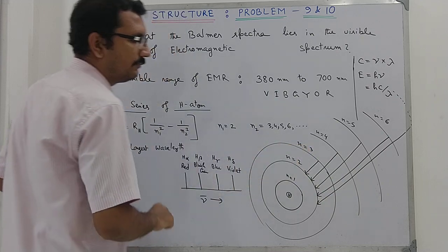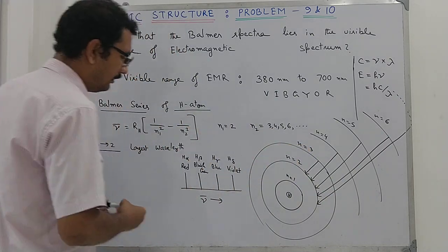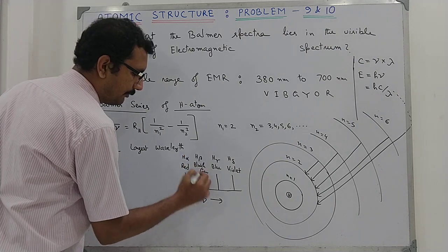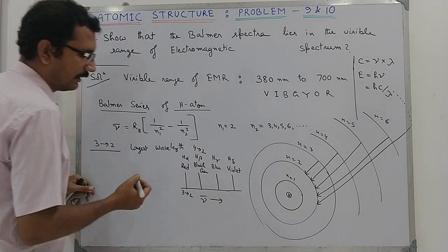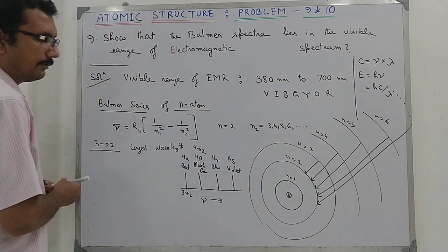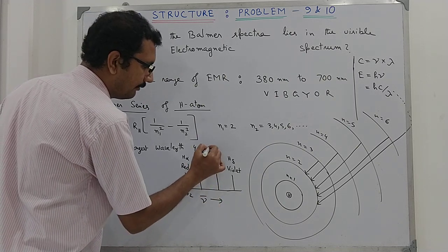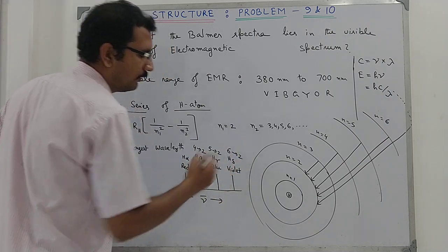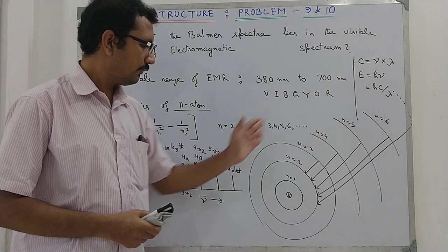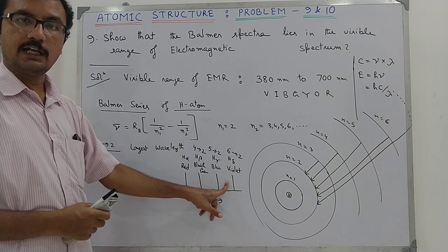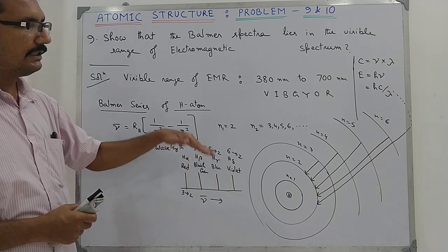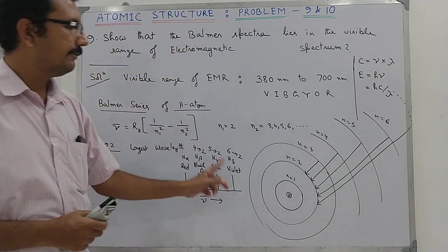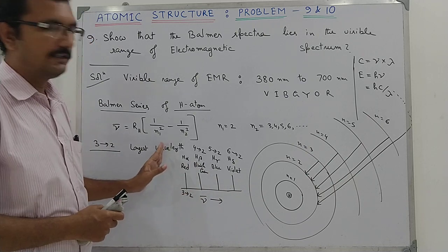The 3→2 transition has the lowest energy, so it gives the longer wavelength — red light (Hα). The 6→2 transition has the highest energy gap among the four Balmer lines, giving the shortest wavelength — violet light (Hδ). If the transition were from infinite distance to n=2, it would give ultraviolet light, which is outside the visible range.